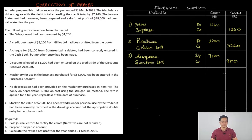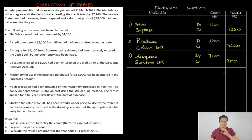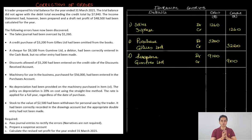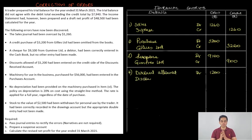The fourth error: discount allowed of 1200 has been entered on the credit side of the discount received account, but it should have been entered on the debit side of discount allowed account. We debit discount allowed to give the correct treatment, and we also debit discount received to reverse the incorrect credit. The total credit goes to the suspense account: Discount Allowed Dr 1200, Discount Received Dr 1200, Suspense Cr 2400.